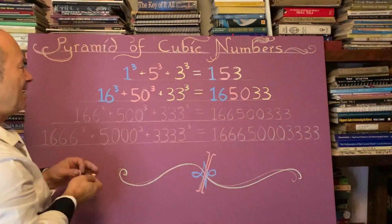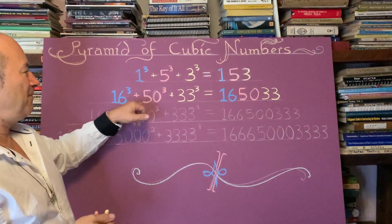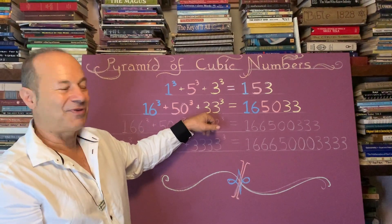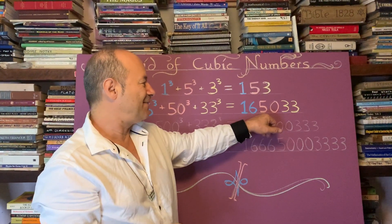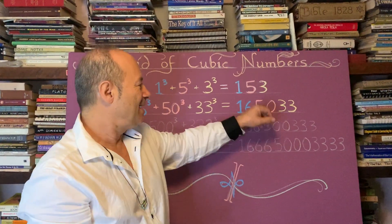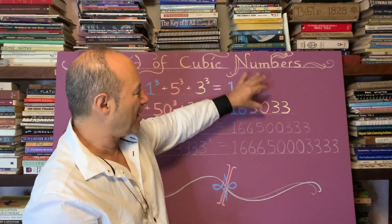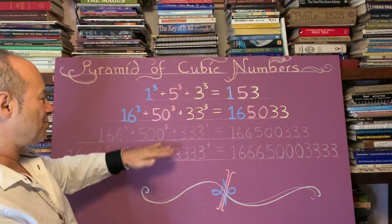What's the chances that when we cube 16 and we cube 50, and we add the cube of 33, it gives 165,033. So I want you to start watching the colour coding as the symmetry pervades.